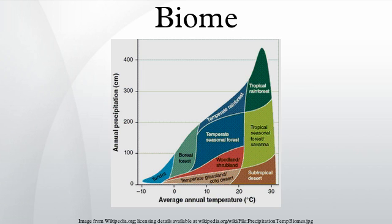Freshwater Biomes: According to the WWF, the following are classified as freshwater biomes: Streams and Rivers. Marine Biomes include the Global 200 biomes of the Coastal and Continental Shelf Areas: Polar, Temperate Shelves and Sea, Temperate Upwelling, Tropical Upwelling, and Tropical Coral.